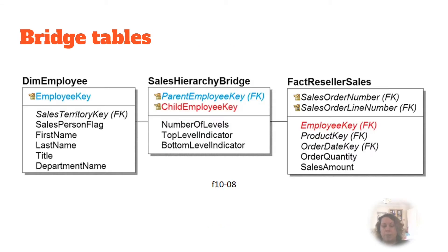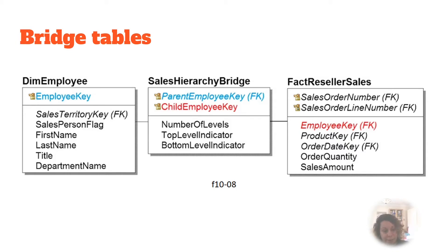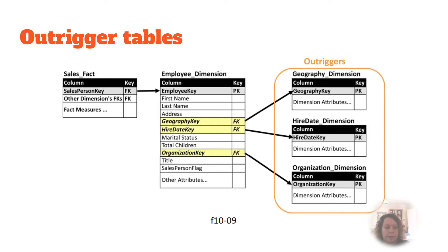An approach to handle variable depth hierarchies is to use bridge tables. A bridge table enables the relationship between dimensions and facts. A bridge table does add complexity to the model and sometimes is not used for that reason.